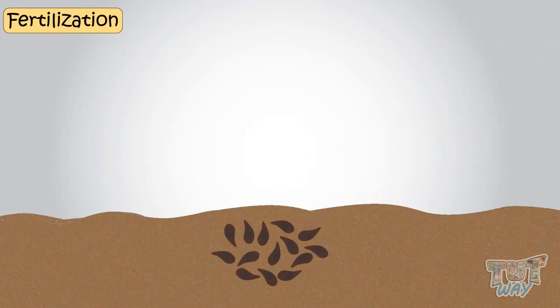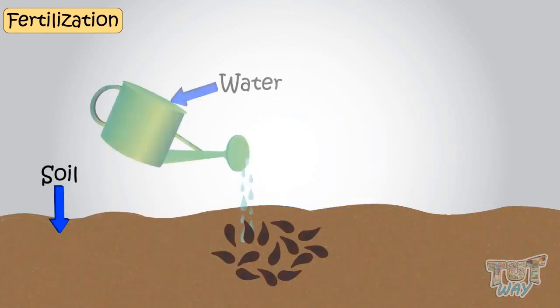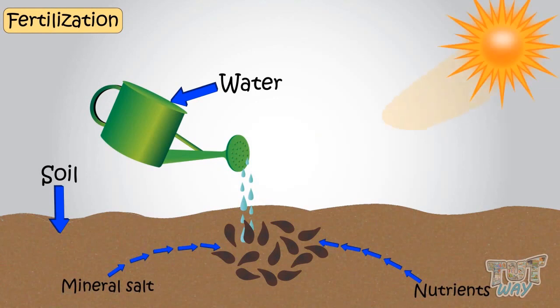If many seeds are sown at the same place or close to each other, there would be a tough competition among seeds for necessities. That is, soil, water, space, mineral salts, and sunlight.